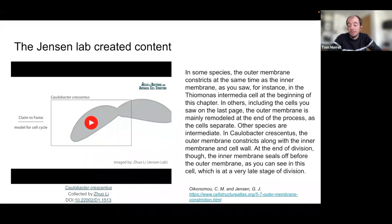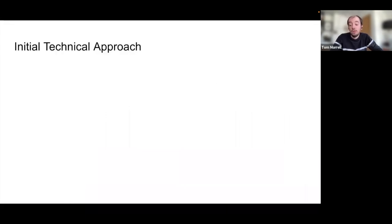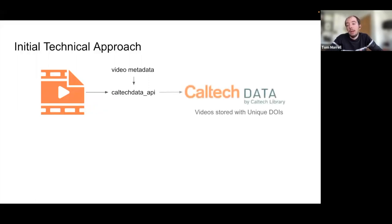We thought about whether we could build something lightweight using static HTML, CSS, and JavaScript that would give the interactive nature they wanted — replicating the physical experience of flipping through a cell atlas but in a sustainable digital form. For our initial technical approach, we utilized services already available at the Caltech Library. For the videos, we treated those like data files that we could put in our data repository. The group wrote up all the video metadata — what type of cell it was, who collected it. We were able to automatically use the CaltechDATA API wrapper to pull the files and metadata together to automatically make records in the CaltechDATA video-based repository, storing all the videos with unique DOIs which we could use to access those specific videos later.